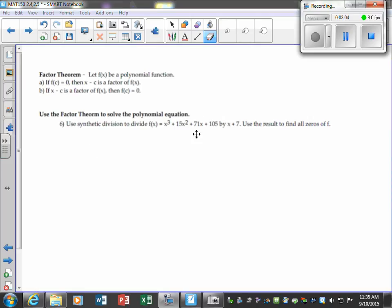Use synthetic division to divide this out and then use the result to find all the zeros of f. We're going to write it in descending order: 1, 15, 71, 105. There's no missing terms. When it's in this format of the x plus format, remember that's when we do the opposite. Use the results to find all the zeros. So let's pause it and do synthetic division.